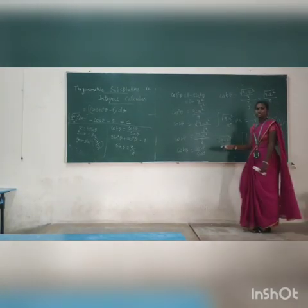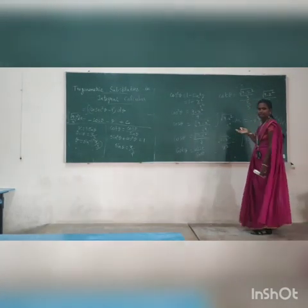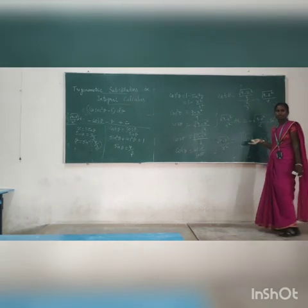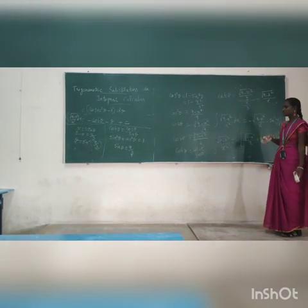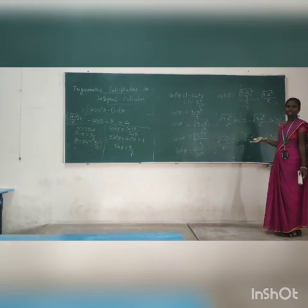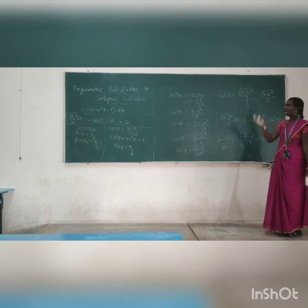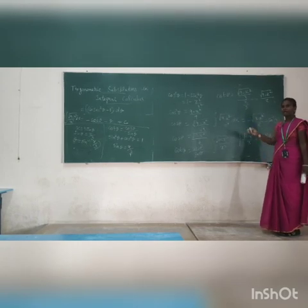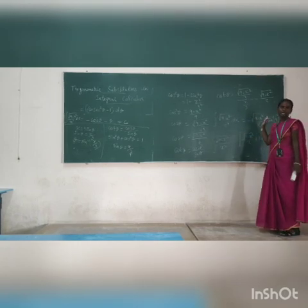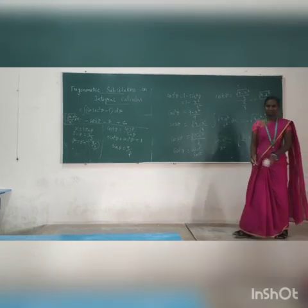So this is the answer for the expression in the form of root of a squared minus x squared, where a equals 3. The answer is root of 9 minus x squared divided by x plus sin inverse of x by 3 plus c. Suppose your equation is in the form of root of a squared plus x squared or root of x squared minus a squared, you have to use the corresponding substitution and identity to get the answer. Thank you very much.